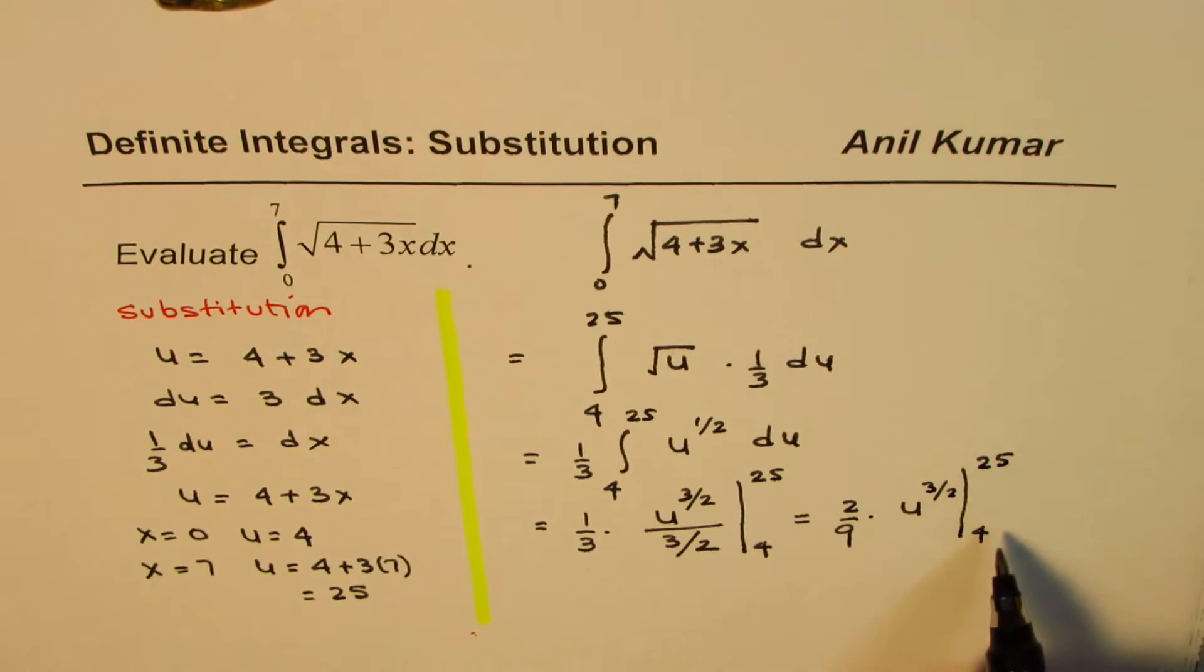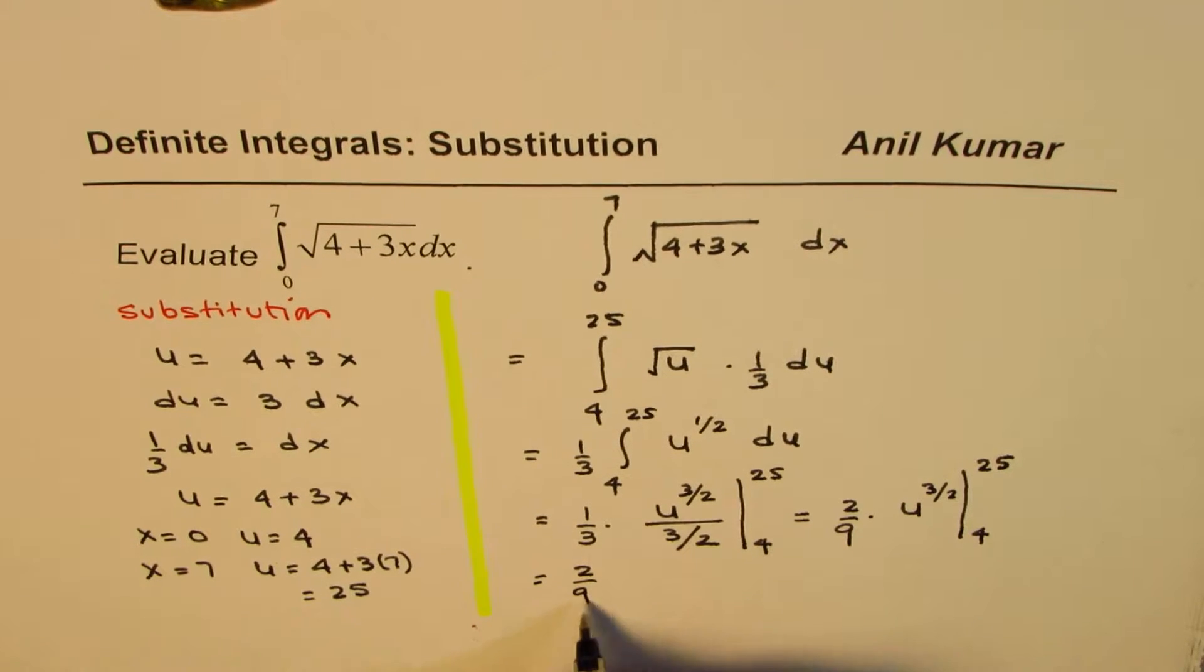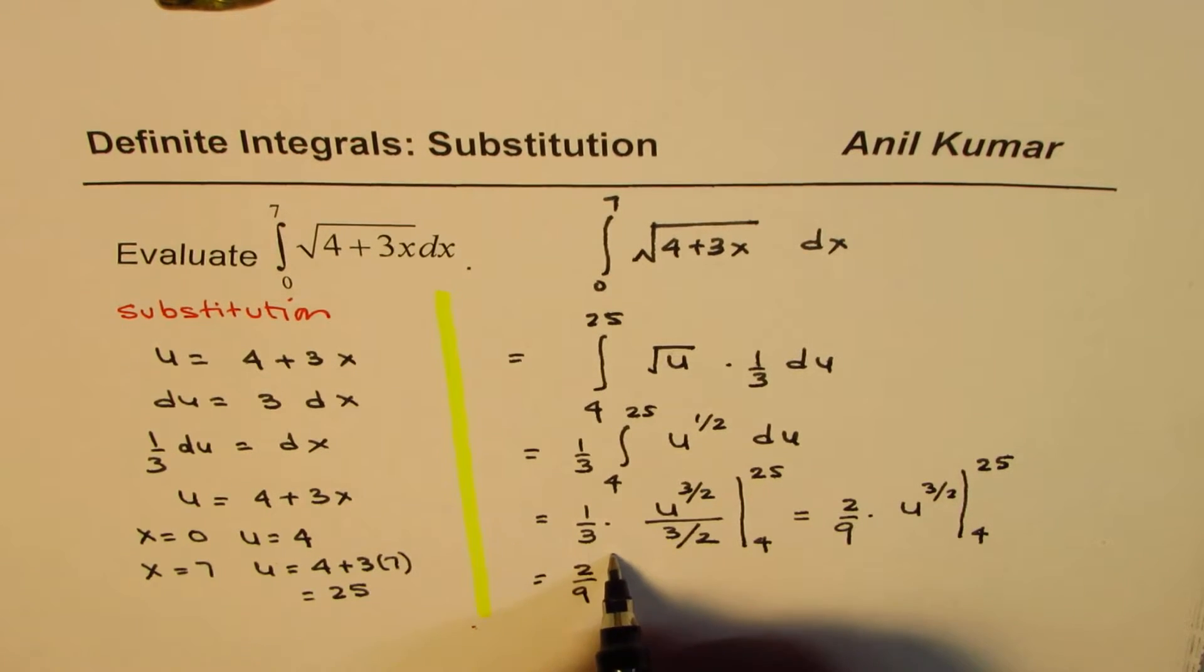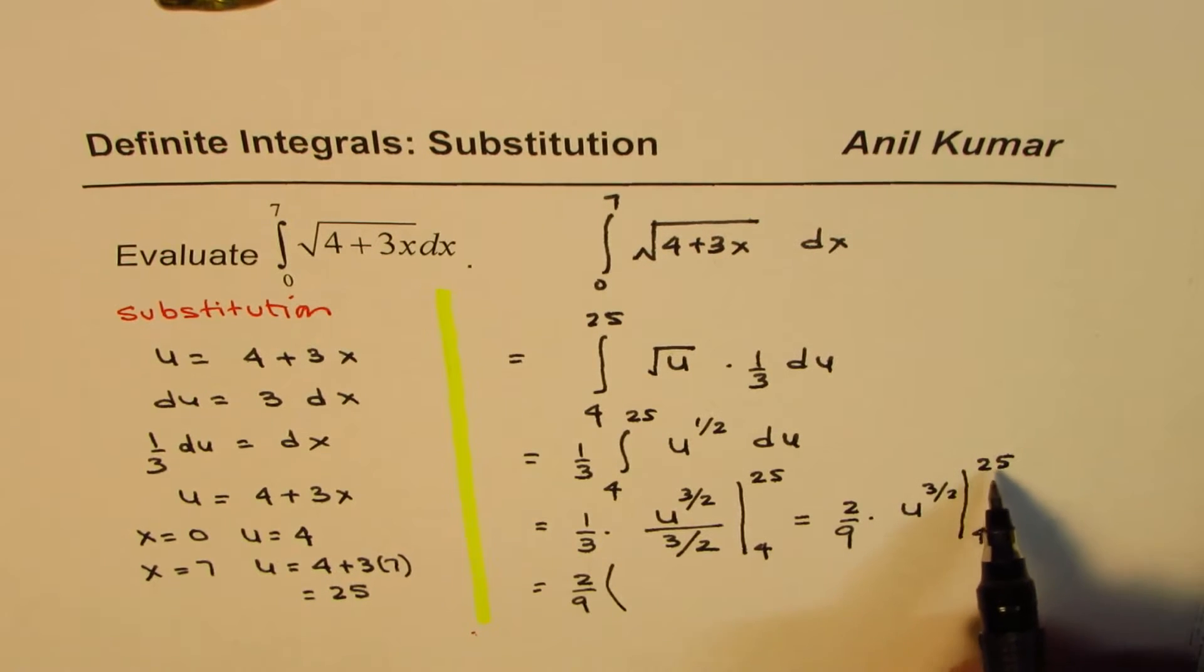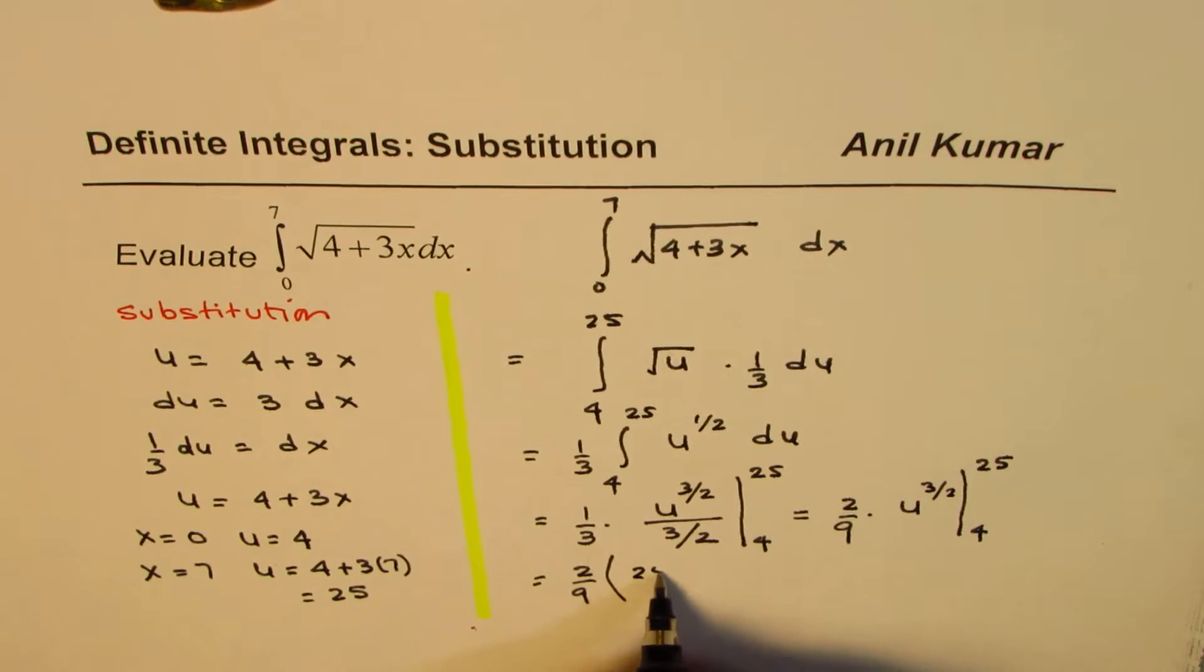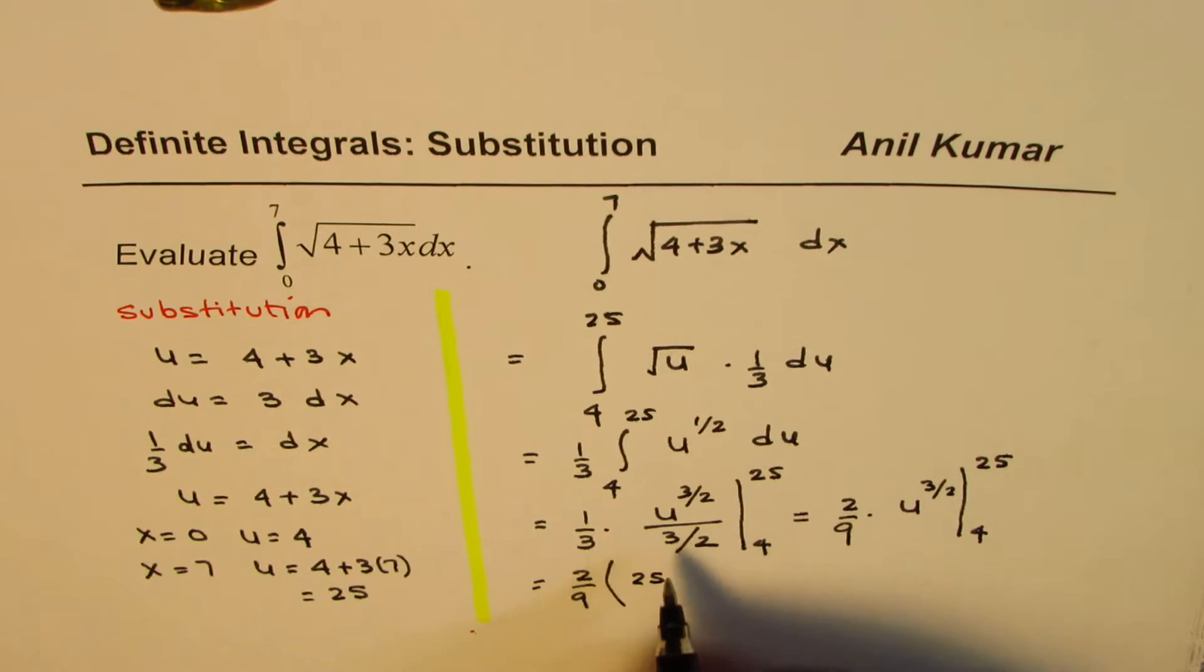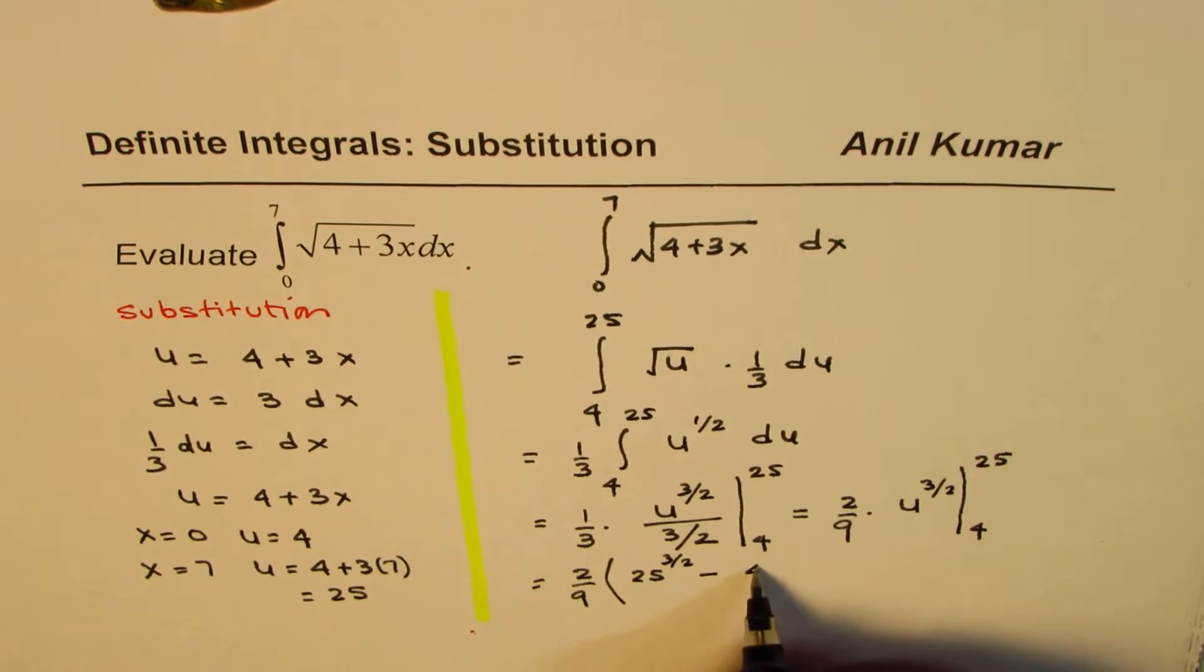So, what we have here is 2 over 9, within brackets, u to the power of 3 over 2. So, u is 25, so we will do 25 to the power of 3 over 2, minus 4 to the power of 3 over 2.